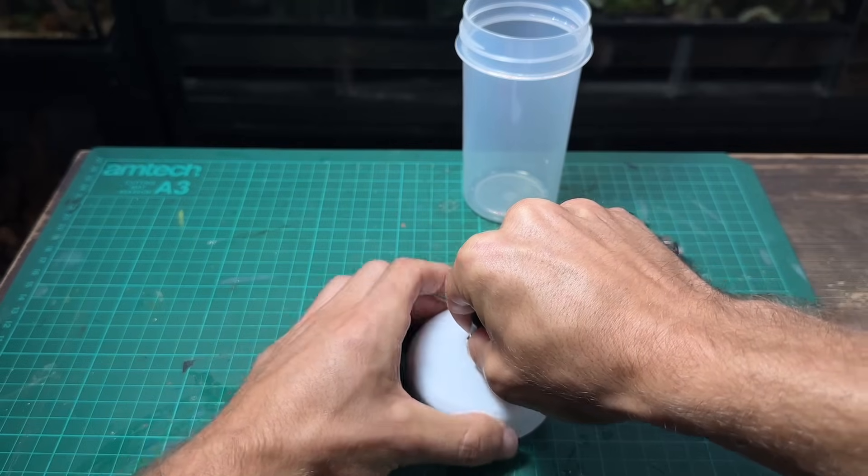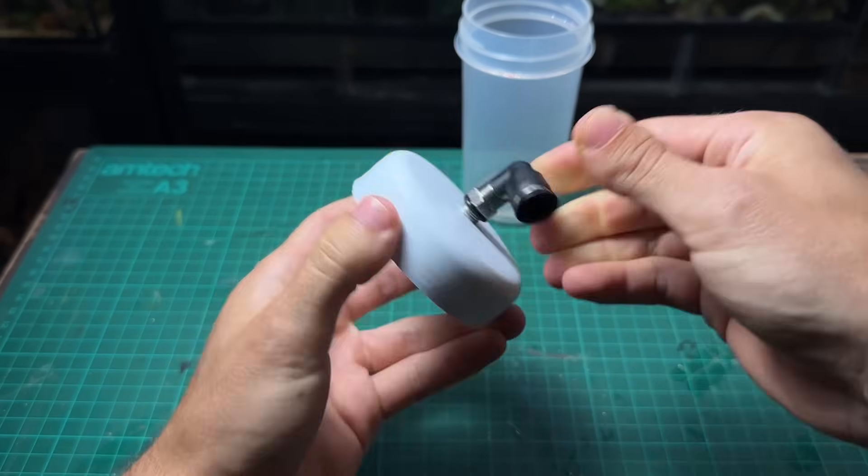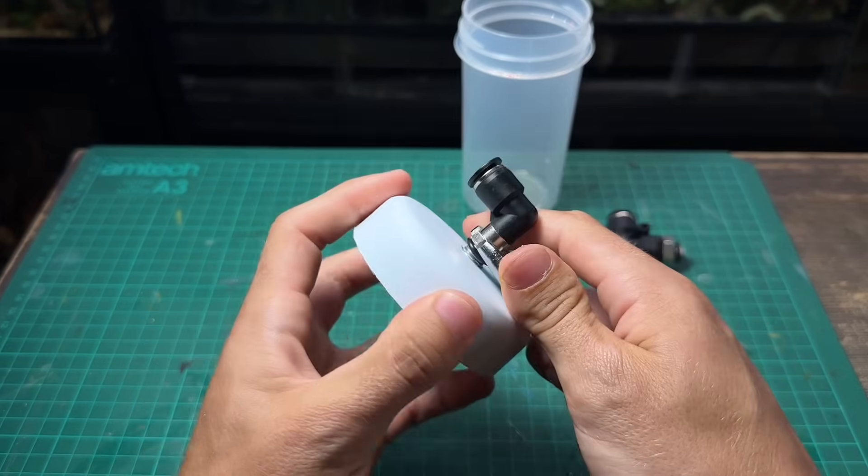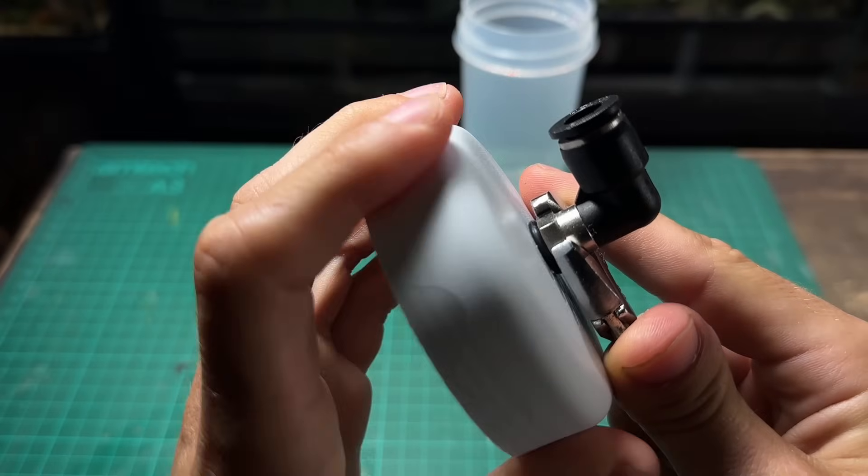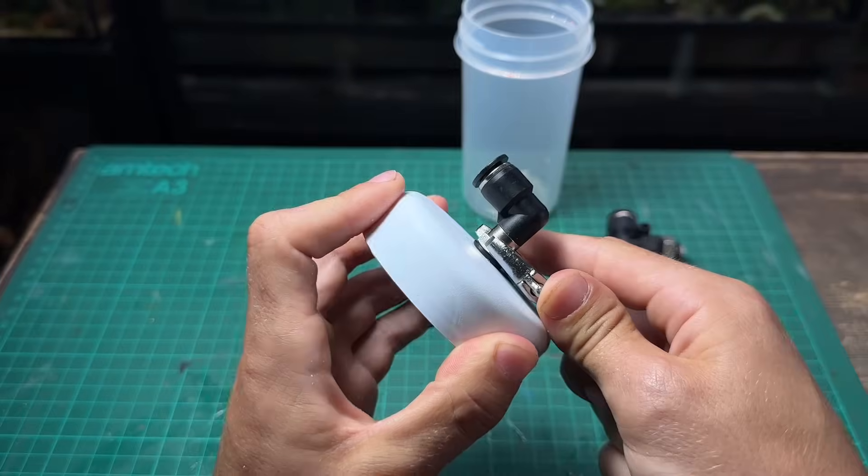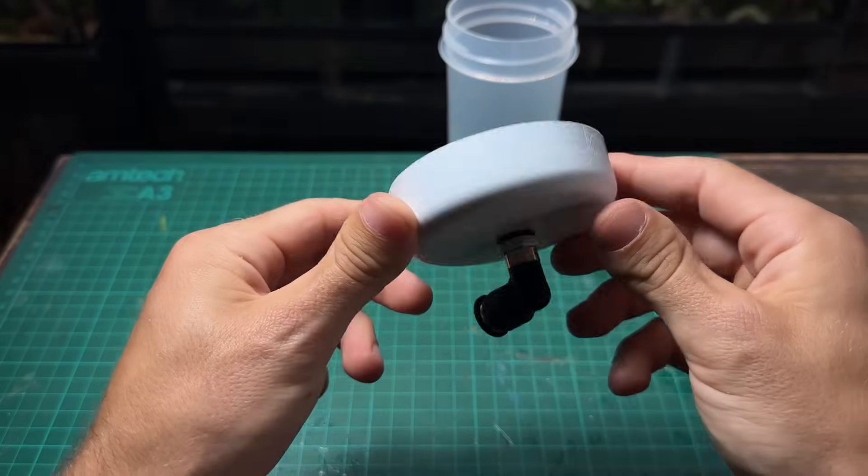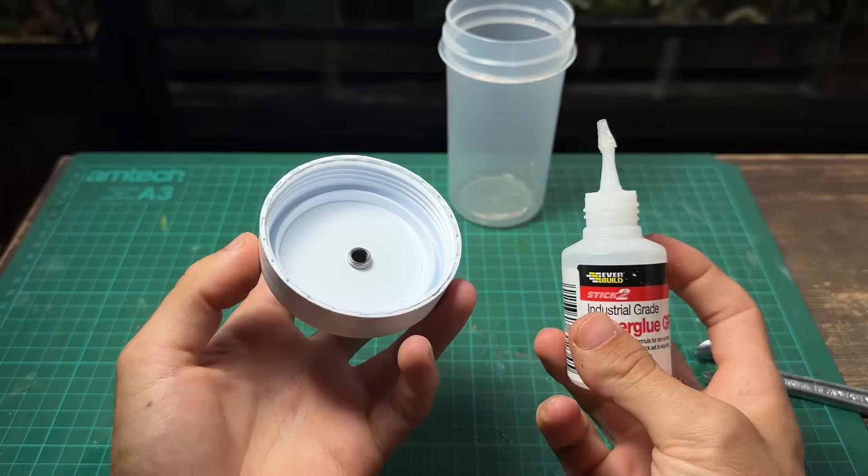With a little bit of force I can now start threading the push fitting into the hole in the lid. A small wrench makes this job much easier. I'm screwing it in until the o-ring is nice and compressed between the lid and the push fitting. With that said I'm making sure not to over tighten as that would screw up the threads.